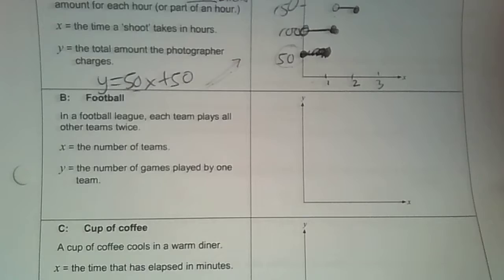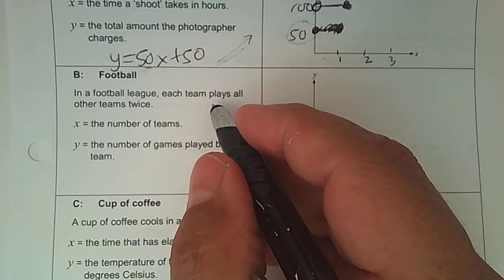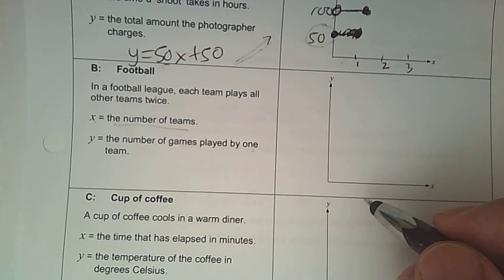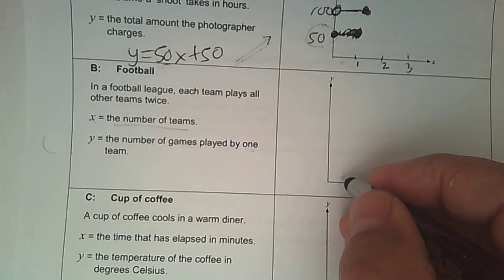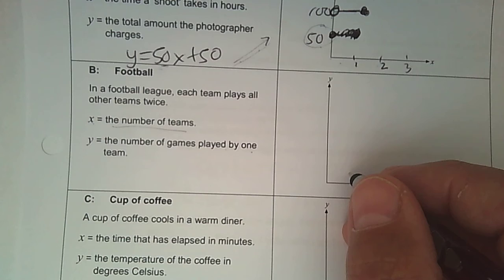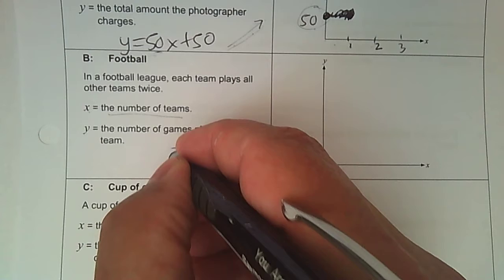So B, football. In a football league, each team plays all other teams twice. So X is the number of teams, and Y is the number of games played by one team. So it matters how many teams there are. So first of all, you can't have a league with one team. So the most you could start with, of course, is two. And if you have two teams and they play each other twice, then it's two. And if you have three and they play each other twice, then it's six, right? Or four, right? Let me see if I can get a cute little table of values to make sure I understand what's happening.